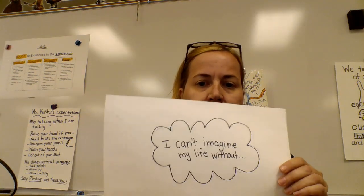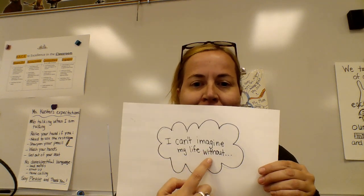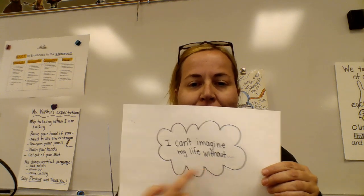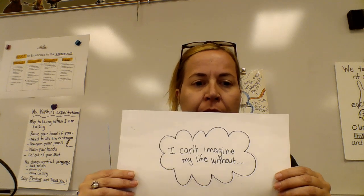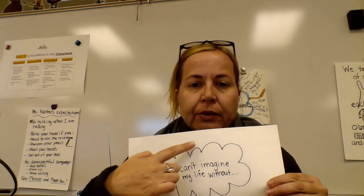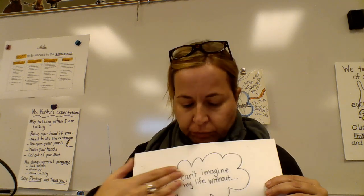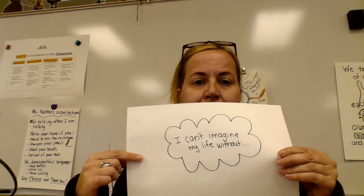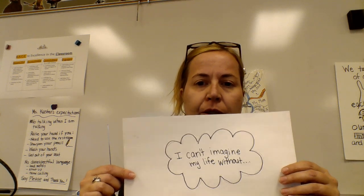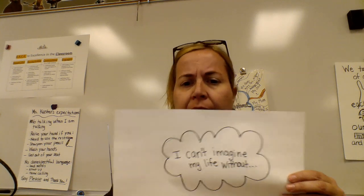Hey there kids, it's time for step two. So far we've done this — we wrote 'I can't imagine my life without,' did that backwards, and put a bubble or a shape around it. Now what I'm going to do is go around the outside and draw lines going from my bubble to the edge of the paper. I'm going to use some straight lines, some zigzag lines, and some wavy lines. You can use whatever lines you want — thick lines and thin lines as well.